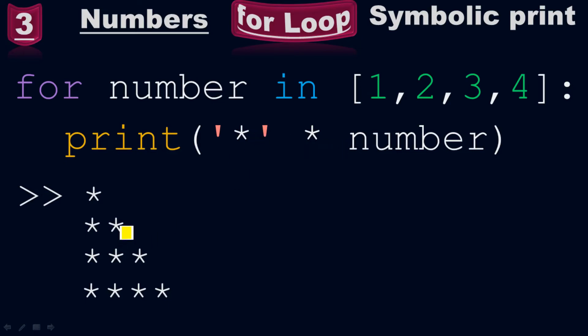Similarly, when the for loop iterates on 3, the number is 3 now, so 3 times asterisk will be 3 asterisks. When the for loop iterates over 4, the number will be 4, so 4 times asterisks will be 4 asterisks. So there we got the symbolic pattern in the output using the for loop.